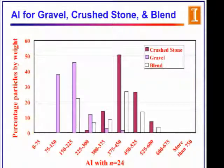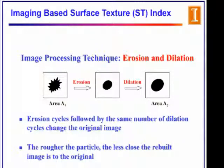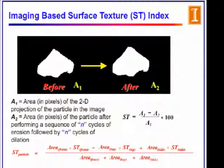Angularity is defined as the summation over frequency of angle changes in 10-degree intervals divided by the number of points around the particle. For a perfect circle, the angularity value is zero; the more crushed the rock, the higher the value. We calculate and average this over the area across all three views. A typical plot shows crushed stone falls on the right side with higher angularity values, while gravel falls on the left. For surface texture index, we use an erosion and dilation method — a popular image binarization technique. The rougher the particle, the more area is lost during erosion-dilation cycles, and surface texture index is calculated normalized over the area across all three views.